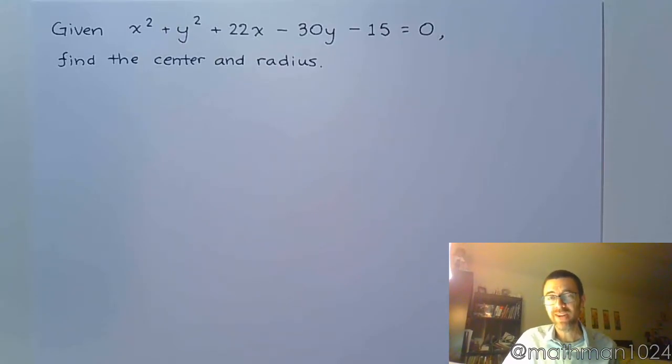Let's do another example of finding the center and the radius of a circle when it starts in the general form like this. So it's all about completing the square. We always have to rearrange our terms as well.